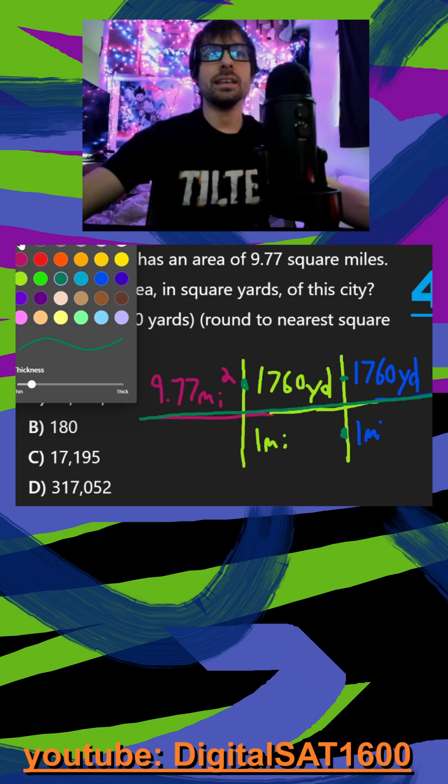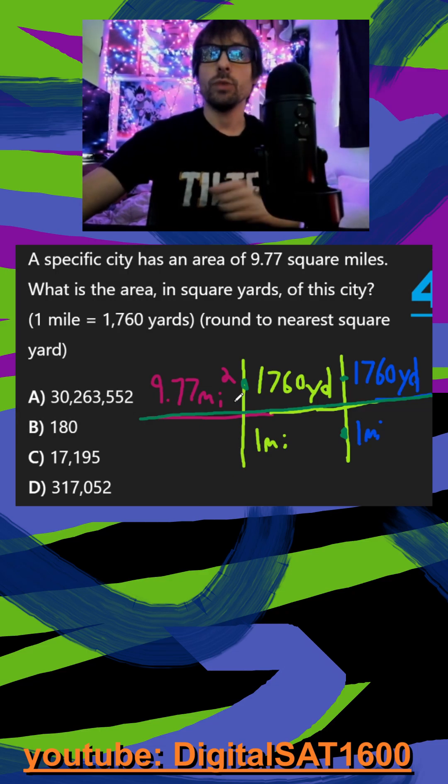So what ends up happening is on top of our equation here, we have miles squared. And on the bottom of our equation, we have miles times miles, which is miles squared. The miles squared is going to cancel out with the miles squared. And then I get yards times yards, which gets me yards squared.